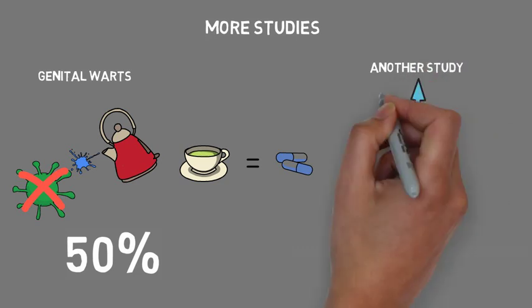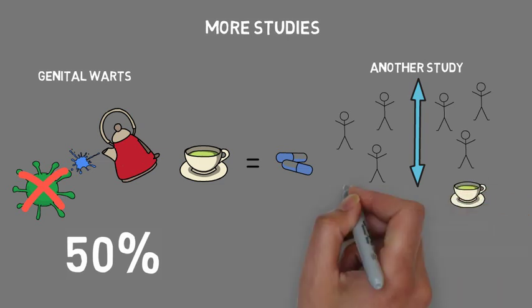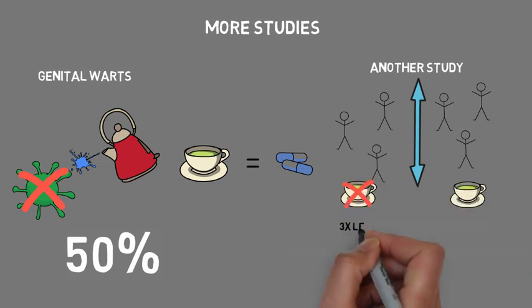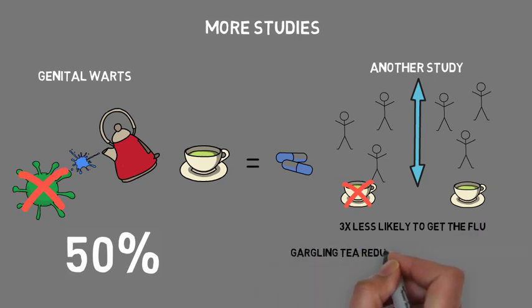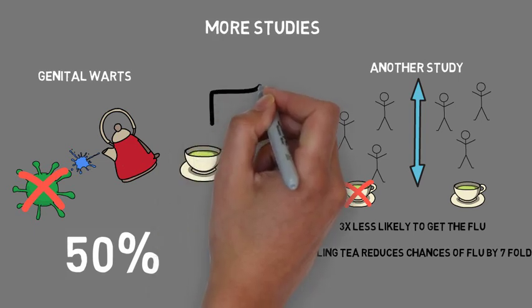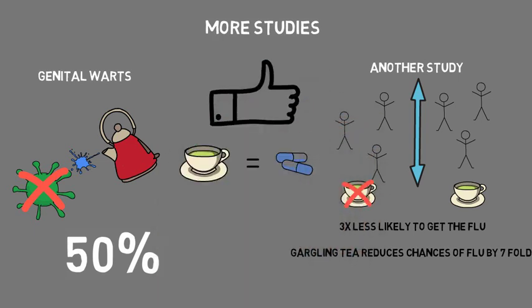In another study, researchers gave green tea every day to some health care workers and didn't give any to the others. After a certain amount of time, they found that those who drank the green tea got the flu three times less than those who didn't. Plus, they found that gargling green tea dropped the risk of getting the flu by seven or eightfold. This was a huge discovery. Green tea is extremely good for preventing infections and viruses.